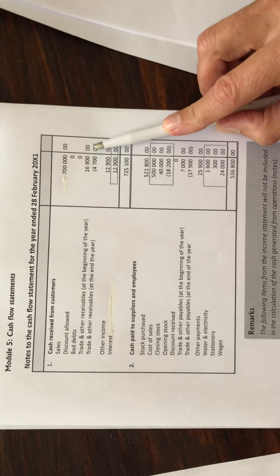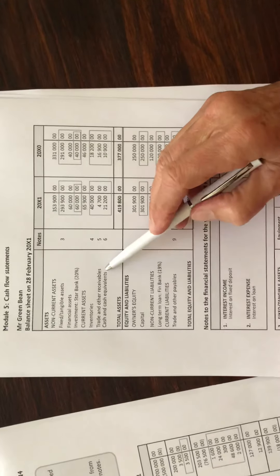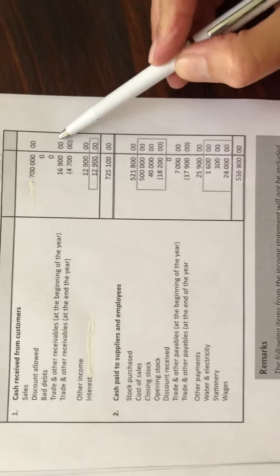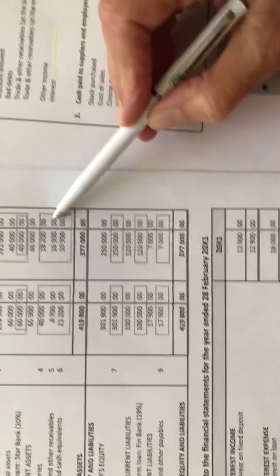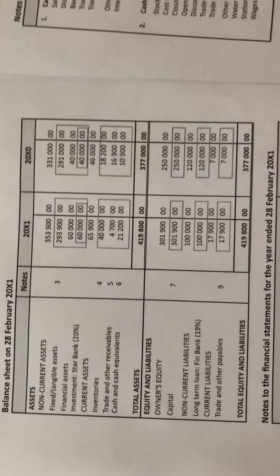We're going to add the trade and other receivables at the beginning of the year. Looking at the balance sheet, trade and other receivables at the beginning of the year was sixteen thousand nine hundred. At the end of the year, trade and other receivables was four thousand seven hundred. We deduct the trade and other receivables at the end of the year — that is why it's in brackets.